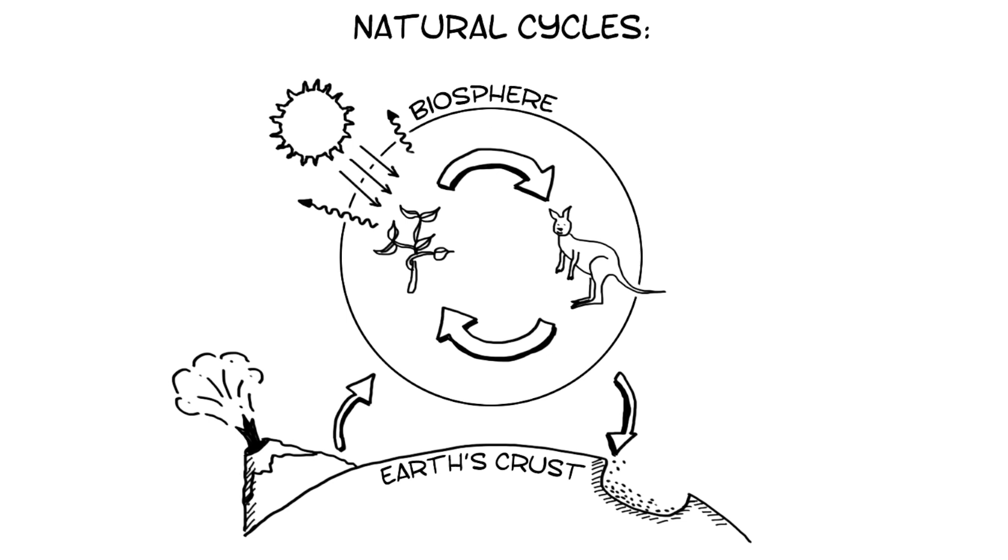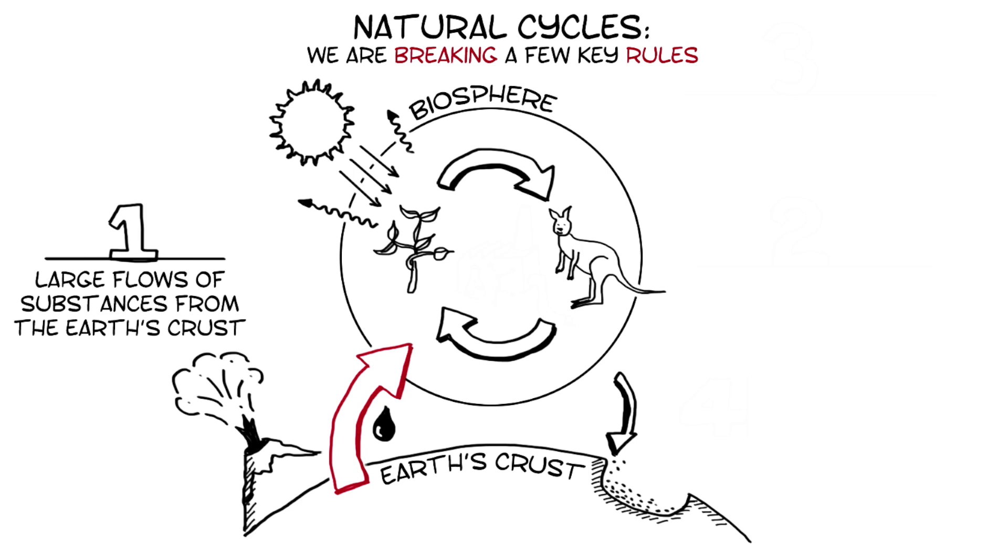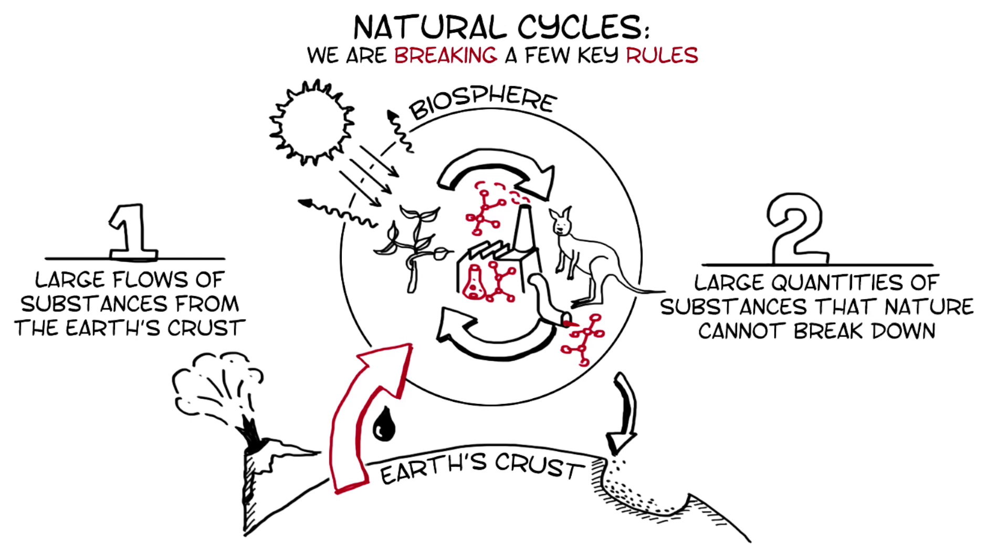So how do the ways in which we meet our needs affect this operating system? Turns out, there are a few key rules we're breaking. Firstly, we're taking substances from the Earth's crust and releasing them into our biosphere so fast that they're increasing at rates never seen before. Secondly, we're creating substances that are difficult for nature to break down and releasing them into our biosphere so fast that they are increasing at rates never seen before. And thirdly, we are physically degrading the natural ecosystems that we use to meet our needs, so they are less able to provide the things we need.